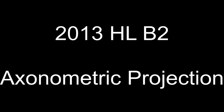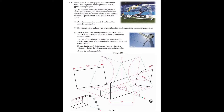This video looks at the 2013 Higher Level Question B2, Axonometric Projection. The question follows much the same format as all others. Soccer is one of the most popular team sports in the world. The 3D graphic shows a set of typical soccer goal posts. Figure B2 shows an incomplete dimetric projection of similar goal posts using the axonometric axis method. The elevation and end view are shown in the required positions, and a pictorial view of the goal post is also shown.